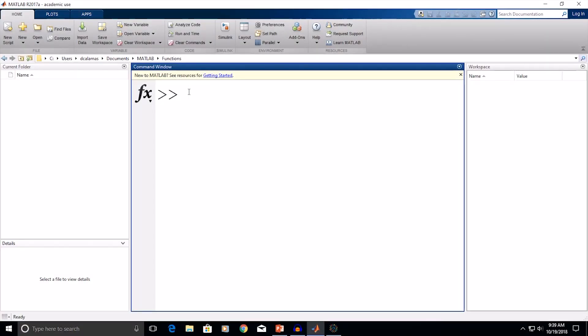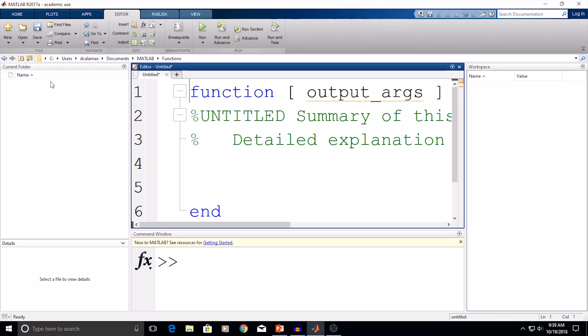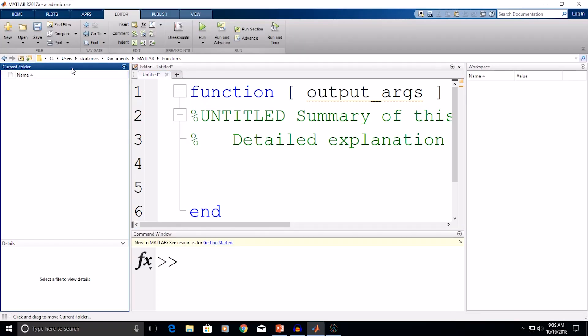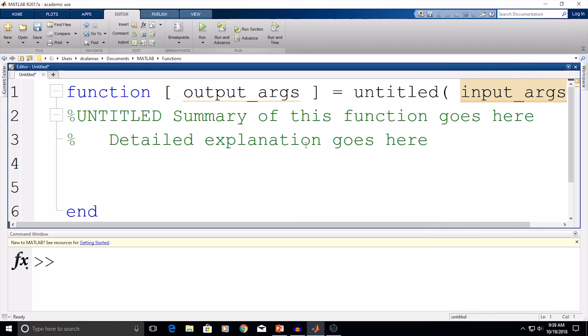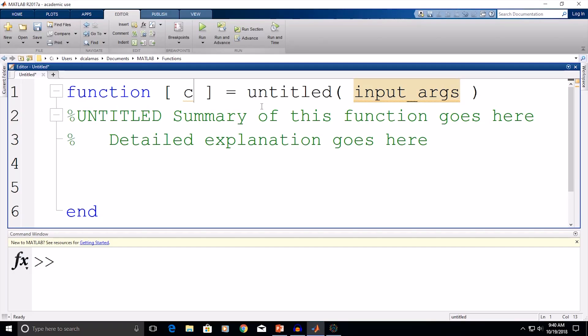The first thing I'm going to do is start a new user defined function file. So I'll click new and then function, and a template pops up right away. Now I'd like to have a bit more screen real estate to work with here, so I'm going to go ahead and minimize the current folder, which shows the directory, and I'm also going to minimize the workspace, which shows any stored variables. Our output argument is the hypotenuse that we'll calculate with the Pythagorean theorem, and I'm going to use variable C for the hypotenuse.